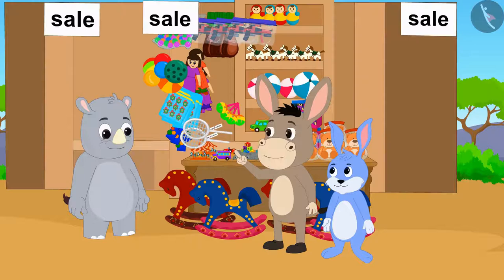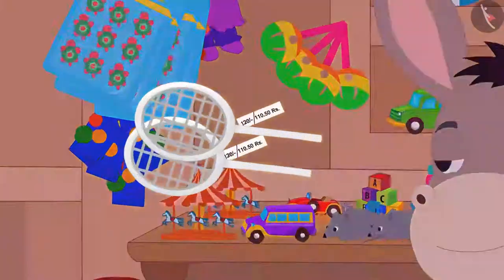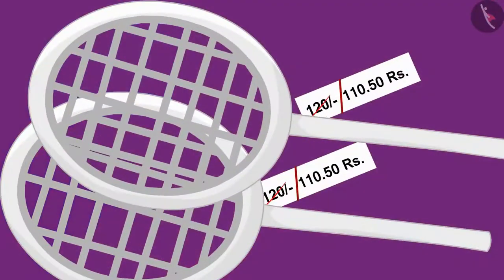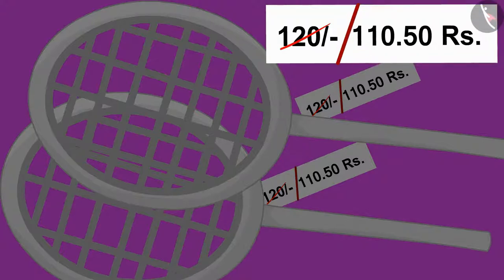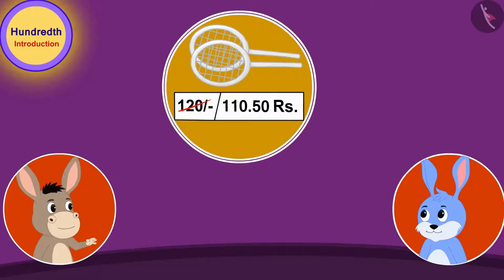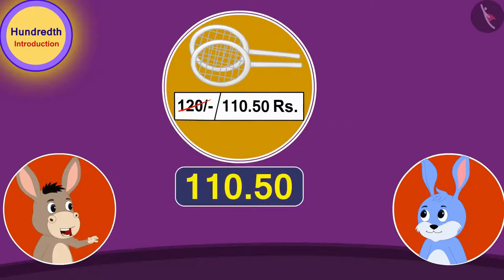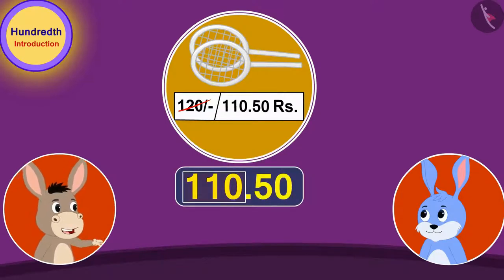Bhoola wants to buy a new badminton racket. The new price — 110.50 rupees — has been written on the racket by striking out the old price. Bunny says: what kind of price is this? I understand one hundred and ten rupees, but how will we give this point five zero rupees?